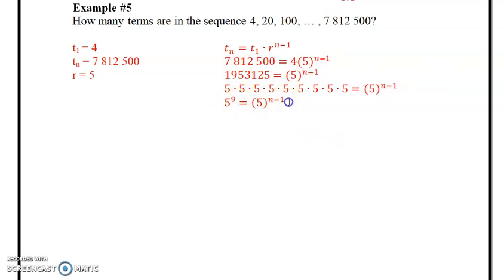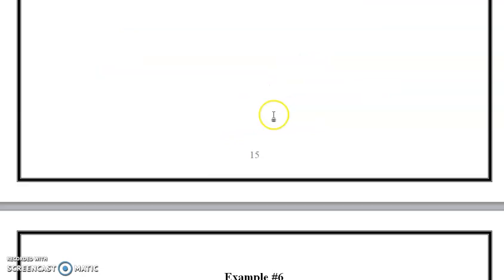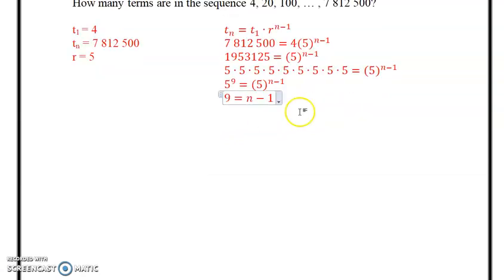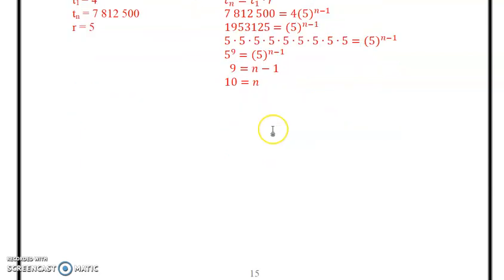So once our bases are the same, we can say the exponents are equal. So now on our next line, we just literally drop the bases of 5. 9 equals n minus 1. So therefore, our last step would be to add 1 to both sides. Adding 1 gives us 0 on the right, and 9 plus 1 is 10. So n is equal to 10.